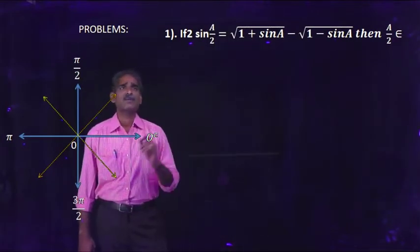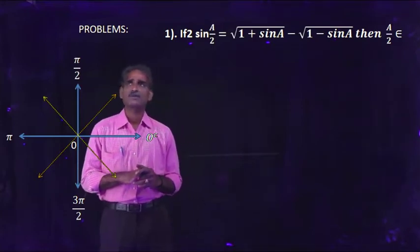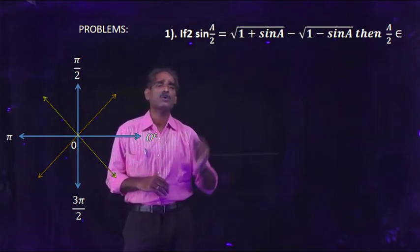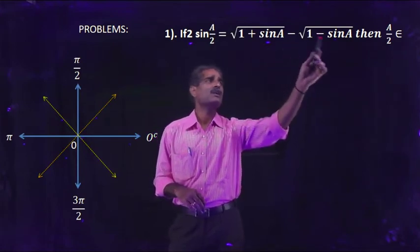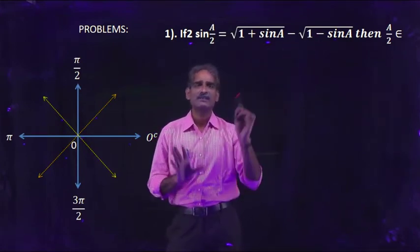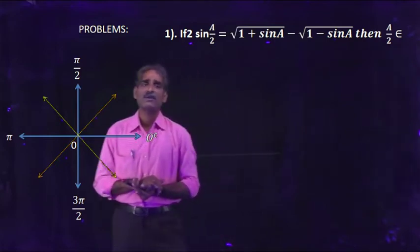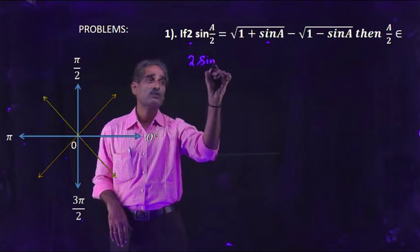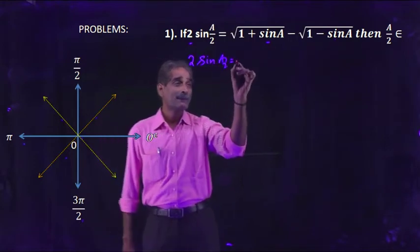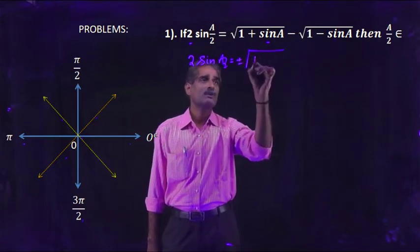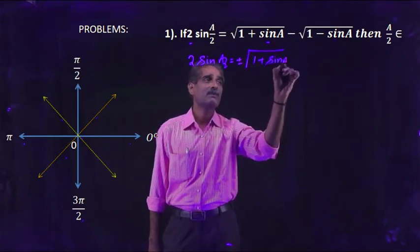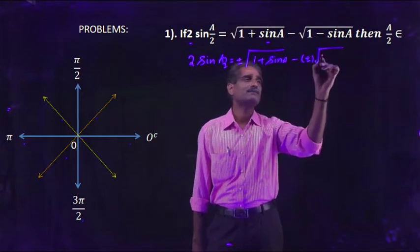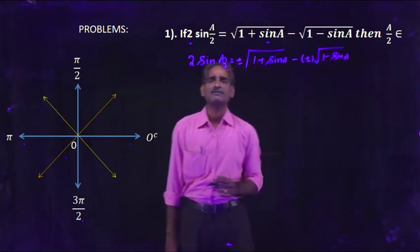Now we will discuss some applications on this concept and solve some problems. The first problem is: 2sin(a/2) equals √(1+sinA) minus √(1-sinA). We know the formula for 2sin(a/2): it is equal to plus or minus √(1+sinA) minus plus or minus √(1-sinA). This is the actual formula.